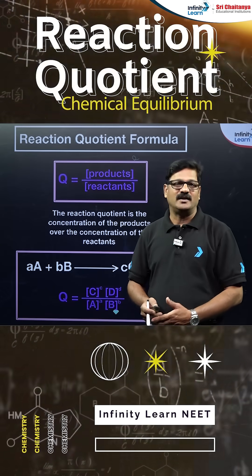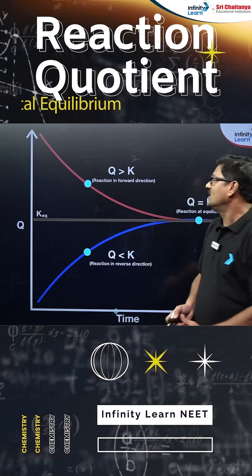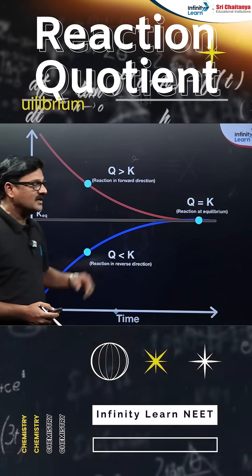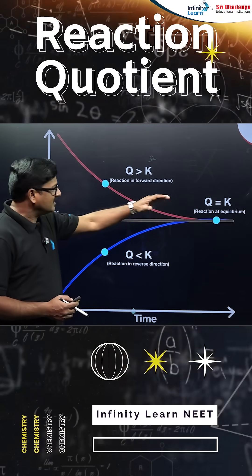What information can we gather from the reaction quotient? You can see if Q is greater than K, equal to K, or less than K. At Q equal to K, it is at equilibrium.